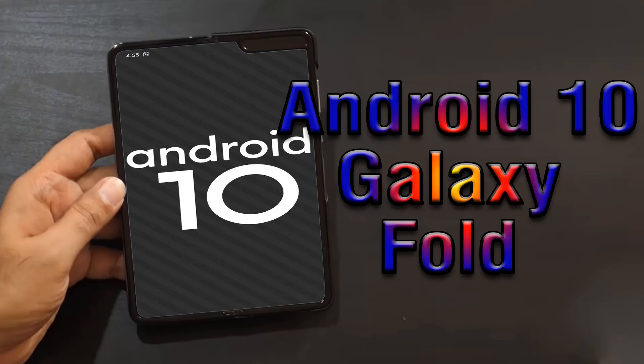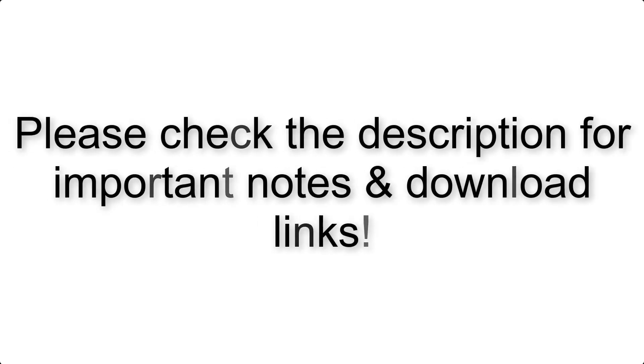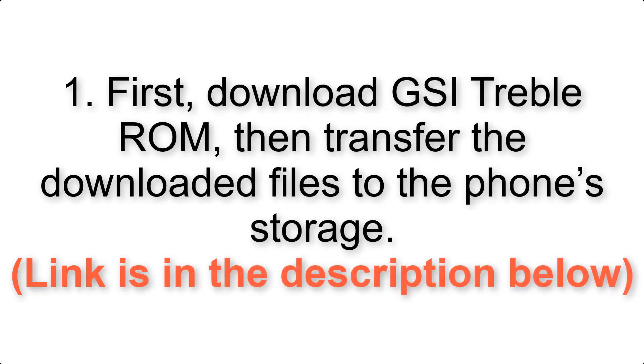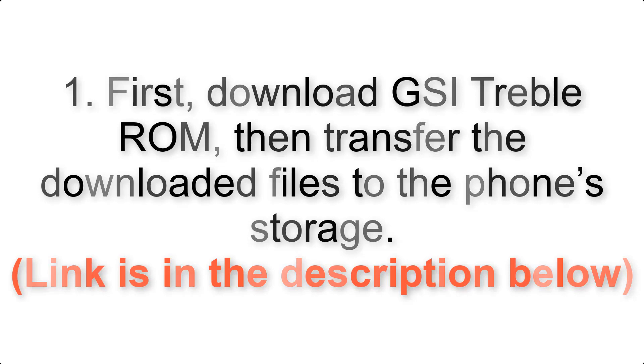Install Android 10 on Galaxy Fold via AOSP GSI treble ROM. Please check the description for important notes and all the download links. First, download the ROM and GApps packages, then transfer the downloaded files to the phone storage. The link is in the description below.